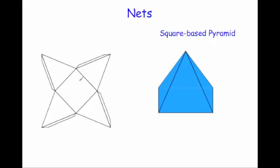This is then the net for a square base pyramid. You've got your square base and you've got your four triangles that fold up together to make the pyramid. This one has got the flaps on it for sticking it. It's your square and then your four triangles.